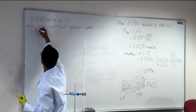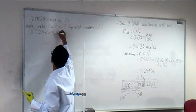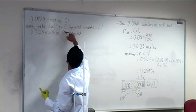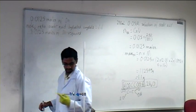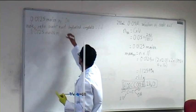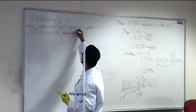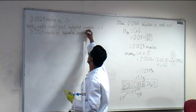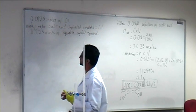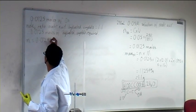Therefore, 0.0125 moles of oxalic acid corresponds to 0.0125 moles of the hydrated crystal. So my mass calculation uses 0.0125 moles of hydrated crystal.